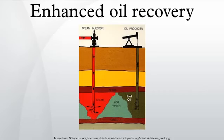Dry forward combustion uses an igniter to set fire to the oil; as the fire progresses the oil is pushed away from the fire toward the producing well. In reverse combustion, the air injection and the ignition occur from opposite directions. In wet combustion, water is injected just behind the front and turned into steam by the hot rock, which quenches the fire and spreads the heat more evenly.